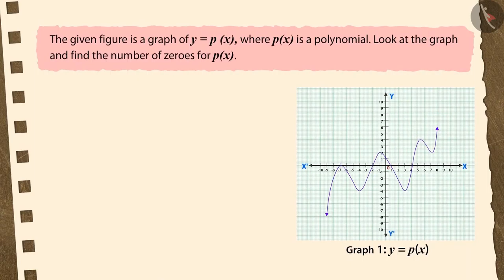The given figure is the graph of y equals px. Look at the graph and find the number of zeros of the polynomial px. Options: 3, 1, 5, 4. To solve this question, pause the video and then match your answer.